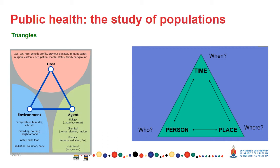The classical triangle of host-agent-environment describes how individuals become ill. Disease occurs when an outside agent, a vector, capable of causing disease or injury, meets a host that is vulnerable to the agent. This happens in an environment that allows the agent and the host to interact.